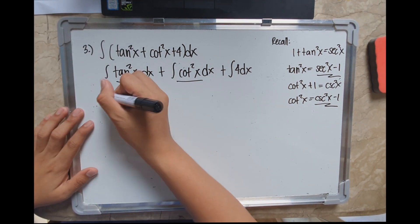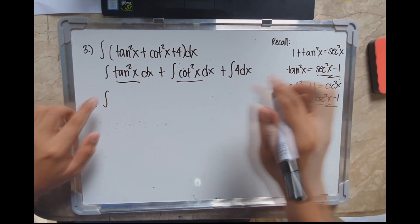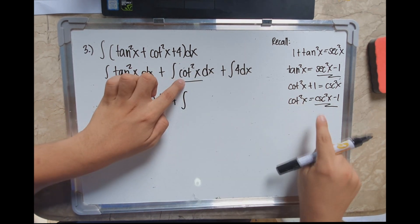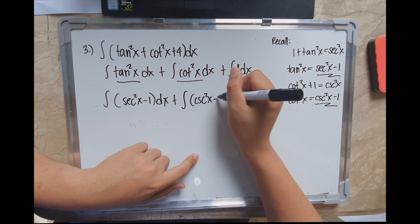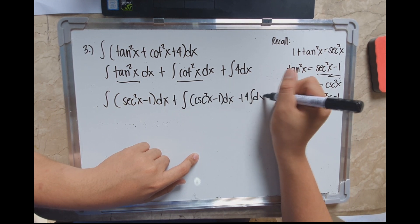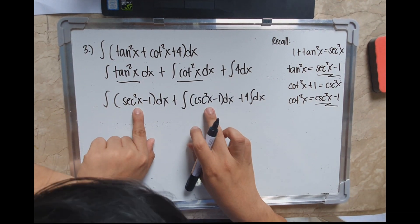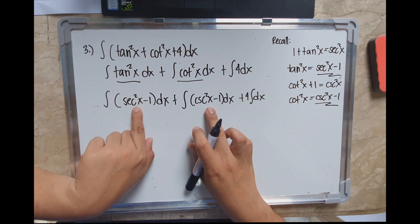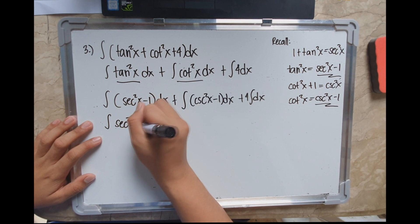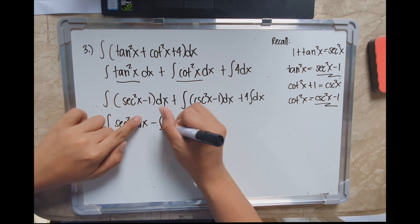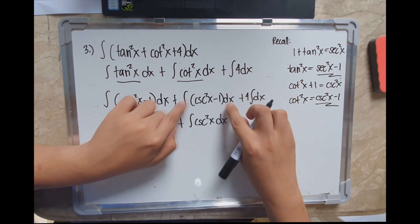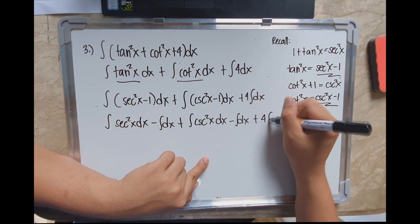Substituting, we get: the integral of (sec²(x) minus 1) dx plus the integral of (csc²(x) minus 1) dx plus the integral of 4 dx. Distributing the integral symbol further: integral of sec²(x) dx minus integral of dx plus integral of csc²(x) dx minus integral of dx plus 4 times integral of dx.